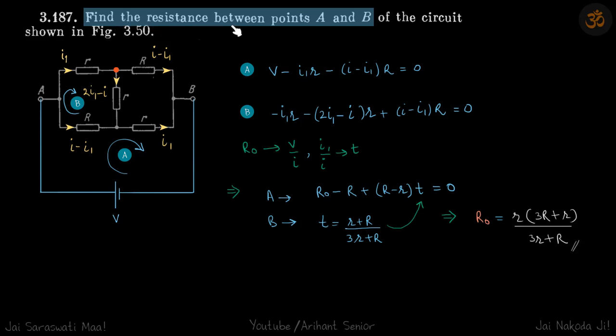We need to find the resistance between points A and B of the circuit shown. So there is a system of resistors, we need to find the resistance between points A and B.